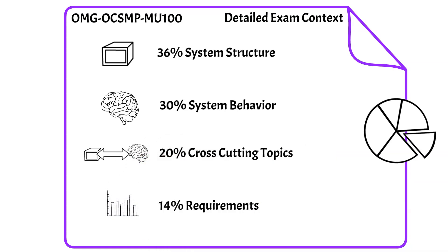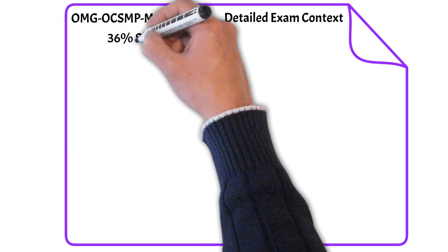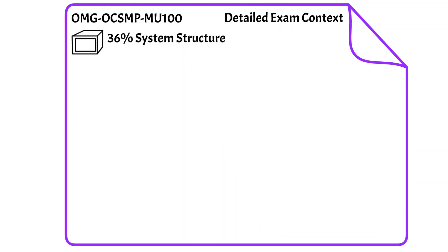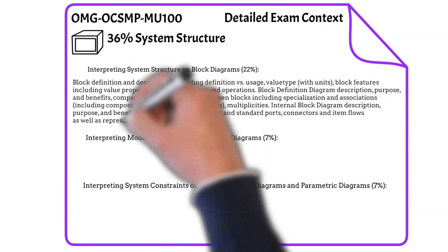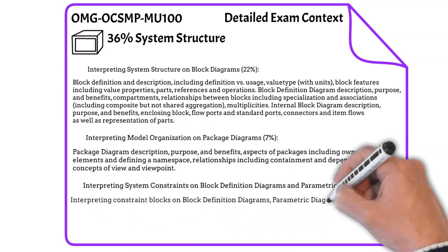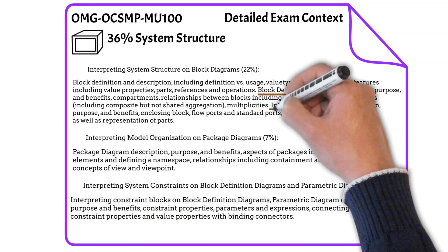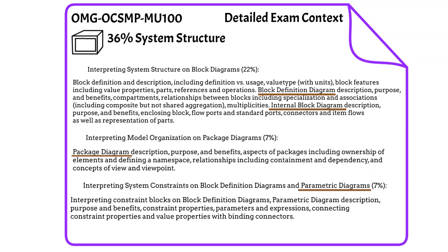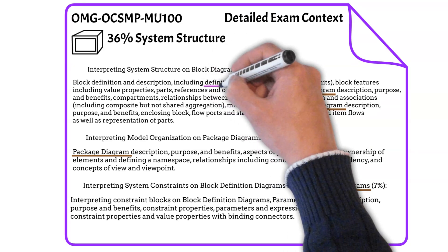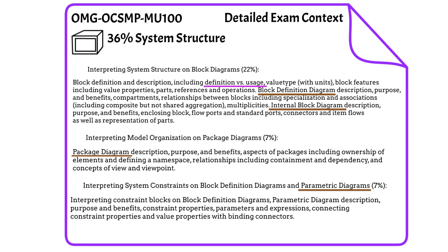The Model User exam tests SysML syntax, with 36% focused on system structure. There are four structural diagrams in SysML: the block definition diagram, the internal block diagram, the package diagram, and the parametric diagram — all four will be on the test. Topics heavily repeated include elements of definition versus elements of usage, as well as understanding the diagram header.